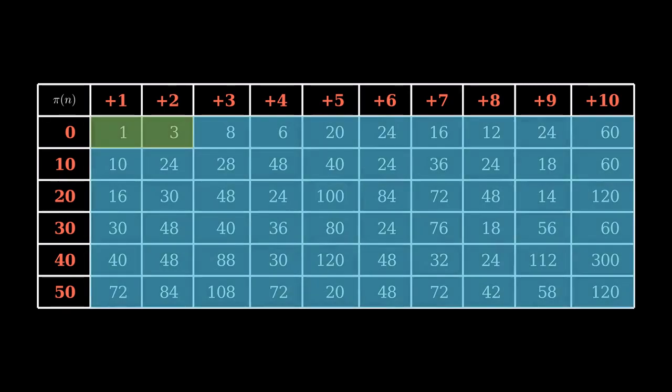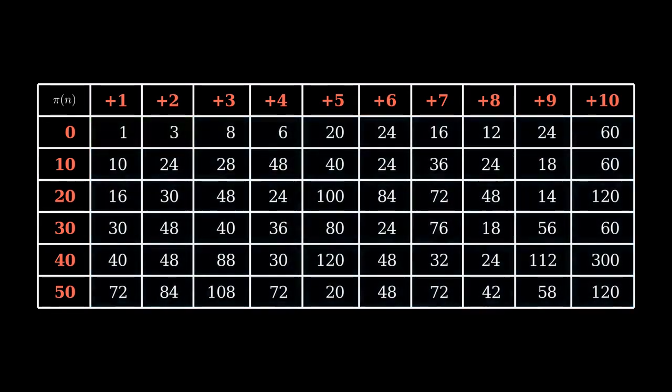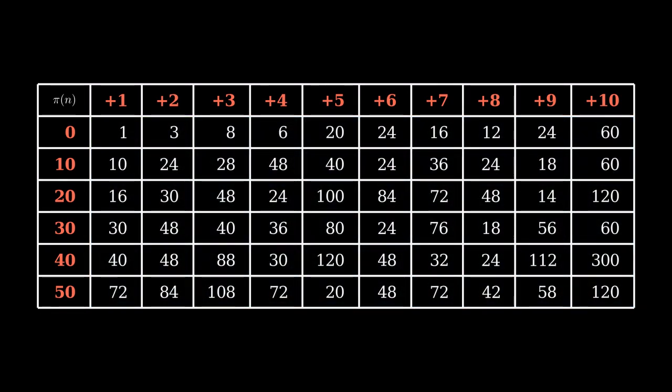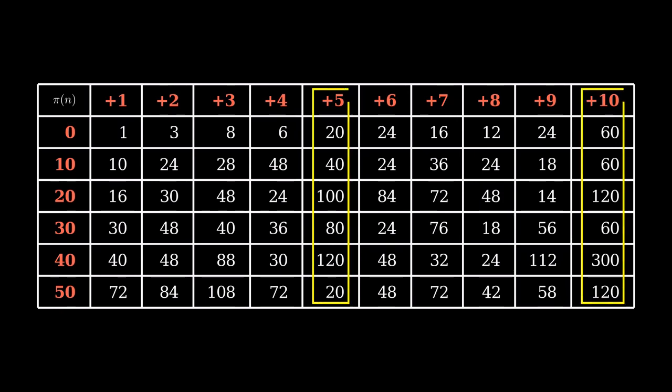First, everything past 2 gives an even number. Second, it looks like, for instance, all the multiples of 5 give multiples of 20, which is the value for 5, and the same goes for the multiples of any number.